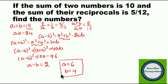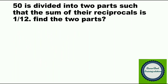So if your answer is 6 and 4, you are correct. Hope you got the problem. Now moving to question number 2. 50 is divided into two parts such that the sum of the reciprocals is 1 by 12. Find the two parts — your time is 45 seconds.